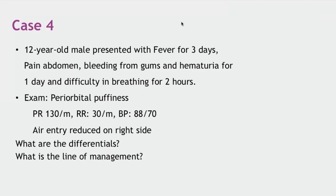The most common variety of shock in dengue is hypovolemic shock due to capillary leakage — fluid leaks into the third space, causing relative hypovolemia. However, shock in dengue can be multifactorial: dengue can cause myocarditis leading to cardiogenic shock; cytokine storm can cause septic shock-like presentation; and massive pleural or pericardial effusion can cause obstructive shock. So all four types — hypovolemic, distributive, cardiogenic, and obstructive — are possible.